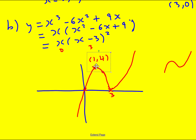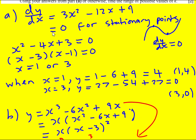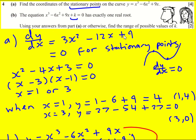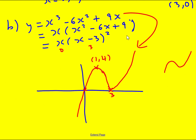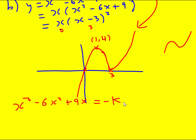Now, for the equation with plus k, I'm going to rearrange and set x cubed minus 6x squared plus 9x equal to minus k. I'm turning it into a situation where I'm interested in where this graph intersects the horizontal line y equals minus k.